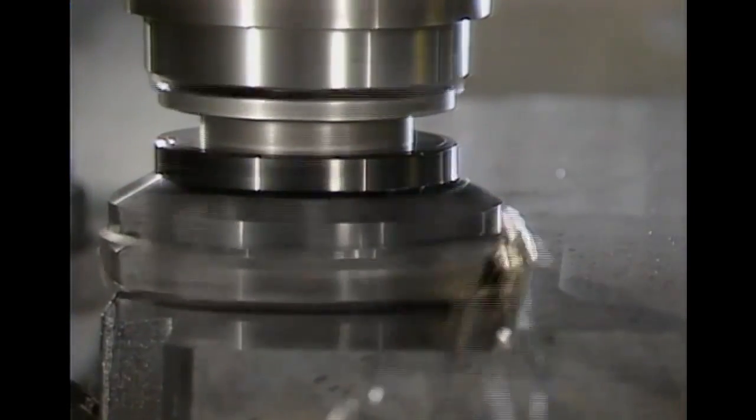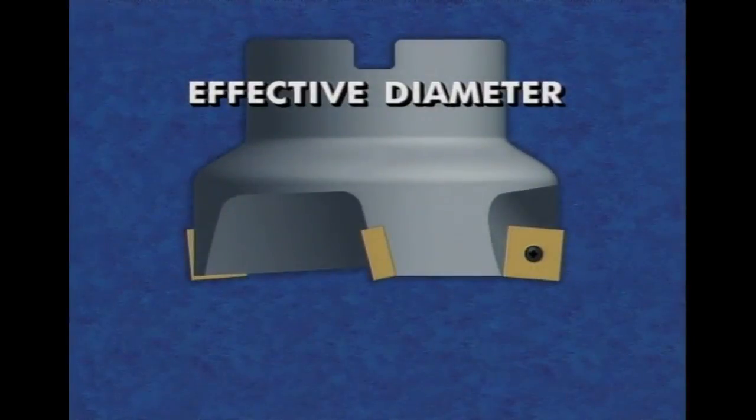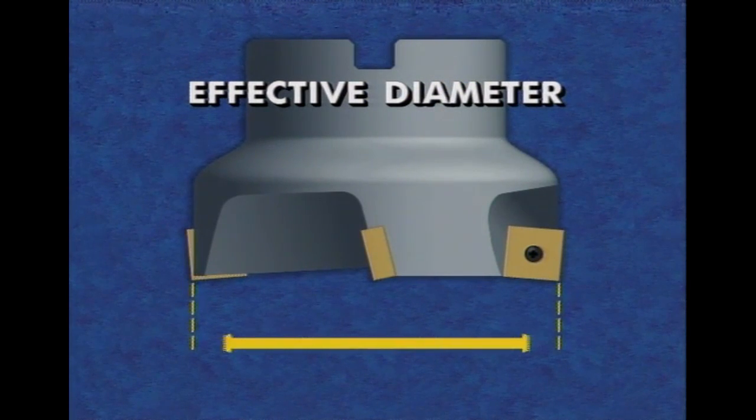For cutting, the effective diameter is the most significant concern. The effective diameter is measured from the highest point on an insert on one side to the highest point on the insert on the opposite side.